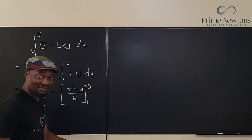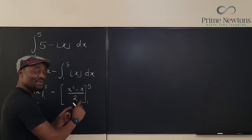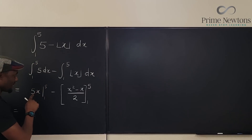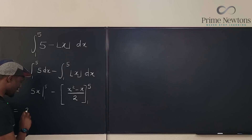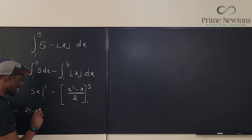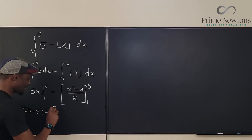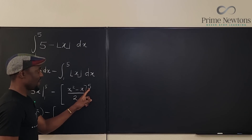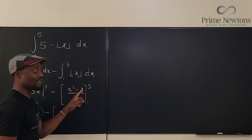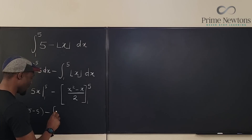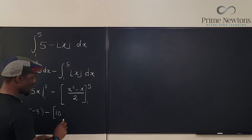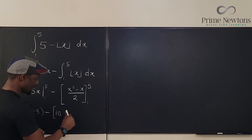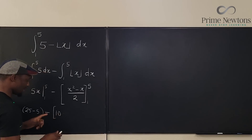I know you have questions — that's why I'm making this video. Let's finish evaluating first. This gives us 5 times (25 minus 5), minus: plugging in 5 gives 25 minus 5, that's 20 divided by 2, which is 10. Minus this parenthesis still applies.